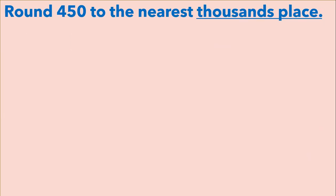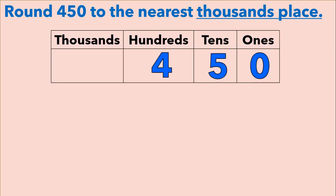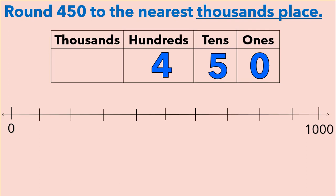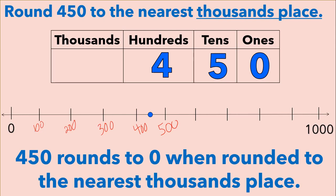Now let's round four hundred fifty to the nearest thousands place. We're going to start with our place value chart and insert our digits. We can see that there are zero thousands, so we're going to start our number line with zero thousands. One more thousand than zero thousands is one thousand. Now we're going to break our number line up into ten equal parts. Because there are numbers from zero to one thousand, each part represents one hundred — so one hundred, two hundred, three hundred, four hundred, and five hundred. I'm going to stop here because that's all we need. We're going to plot four hundred fifty, which is right in between four hundred and five hundred. We can see that four hundred fifty is closer to zero than it is to one thousand, so four hundred fifty rounds to zero when rounded to the nearest thousands place.